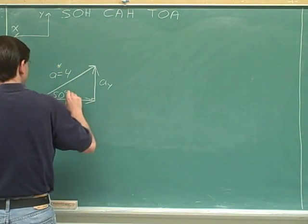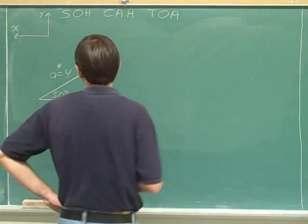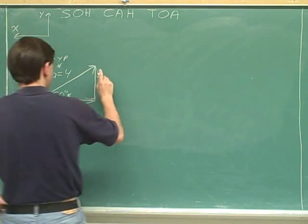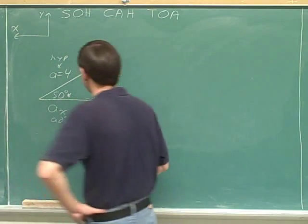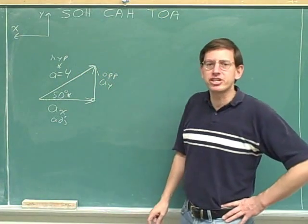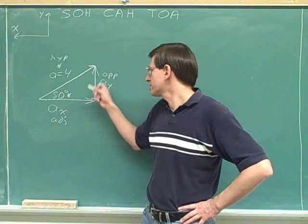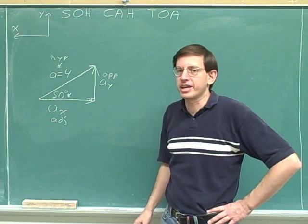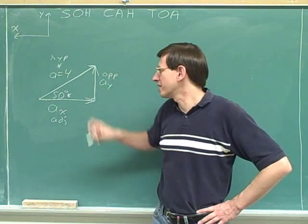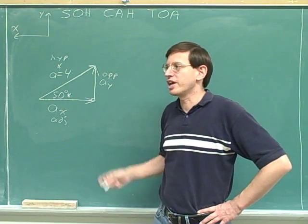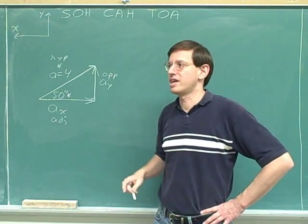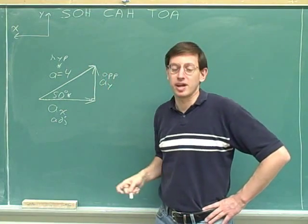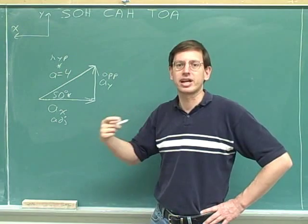We'll asterisk the sign we're given and the angle that we're focusing on. We should indicate which side is the hypotenuse, which side is adjacent, and which side is opposite. Eventually, you may feel you don't need to keep writing adjacent, opposite, and hypotenuse. But if you find that you're making careless mistakes, go back to writing them down. It's much better to write a little more and make fewer careless mistakes, so keep writing these labels until you're really confident.